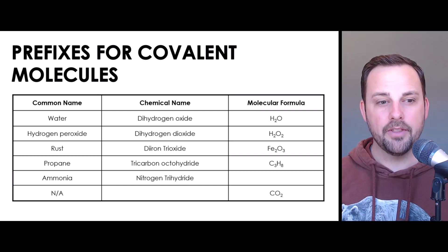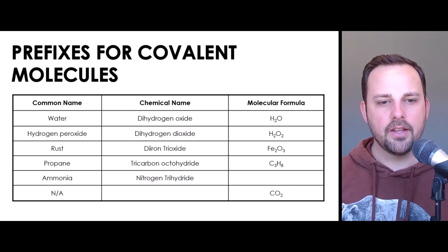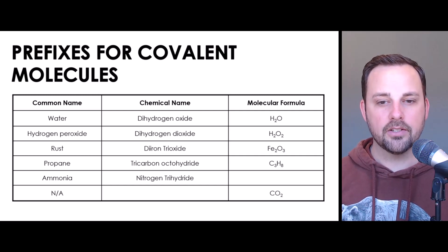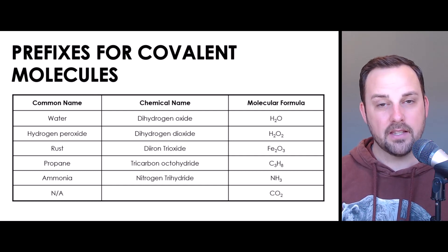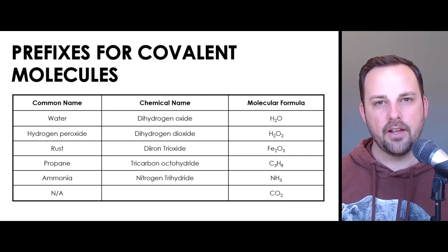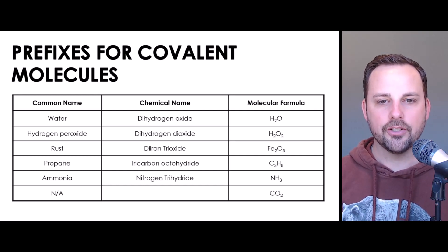Let's do another common chemical that might be found around people's homes: ammonia. Try to do this on your own — based on the information there, how would we write out the molecular formula for ammonia? The answer is NH3. N is there by itself, indicating there is only one nitrogen atom, but H has the subscript three, which tells us there are three hydrogen atoms. That agrees with the chemical name: nitrogen trihydride.